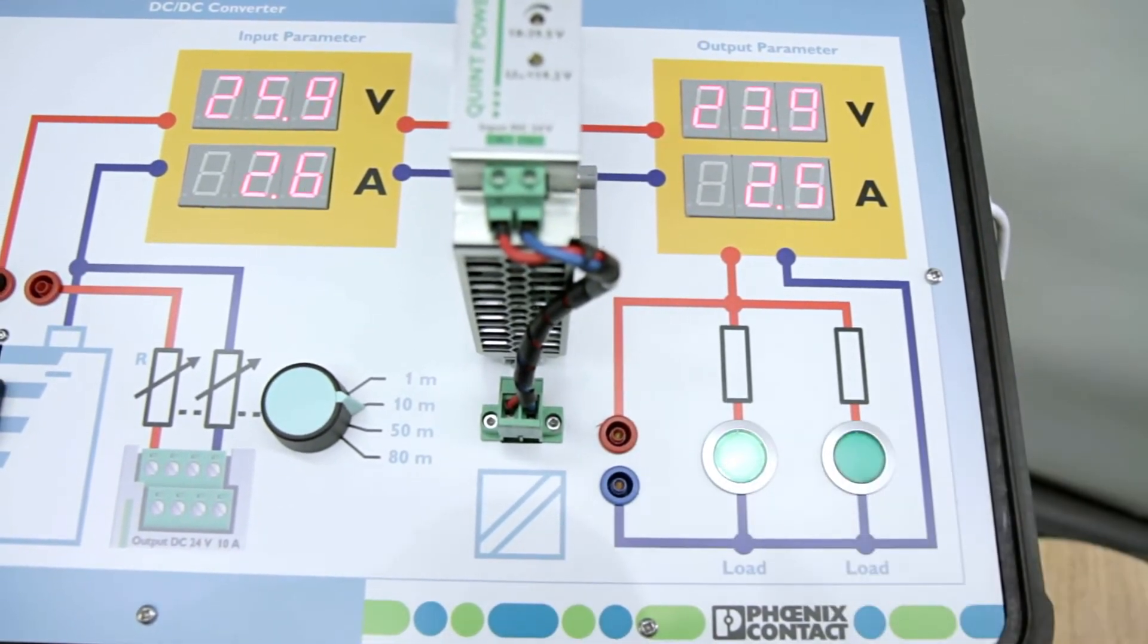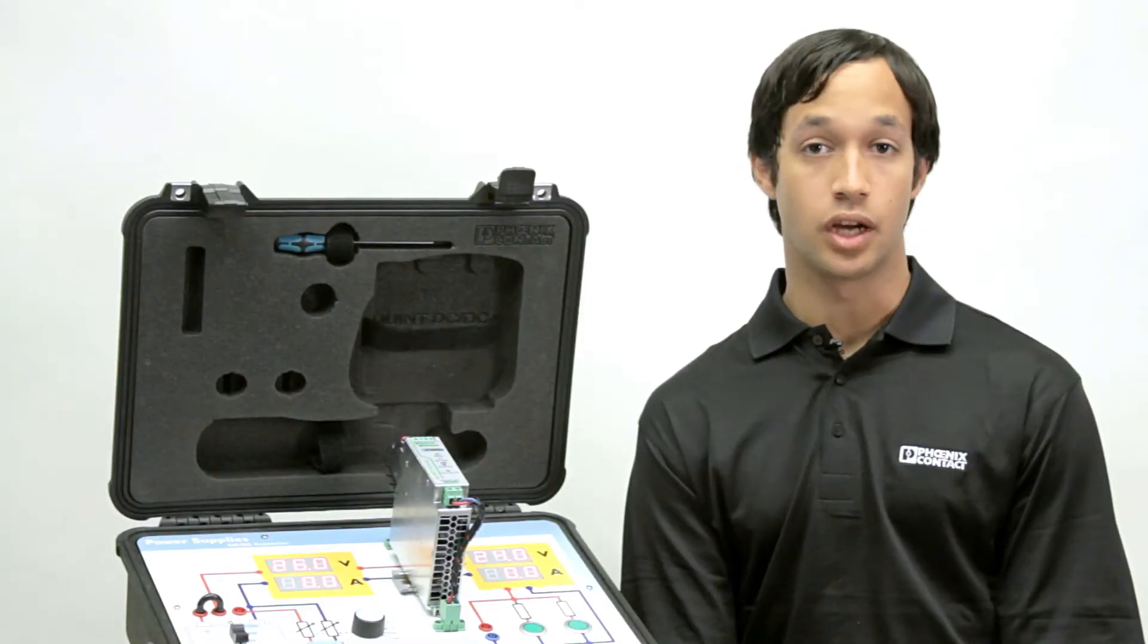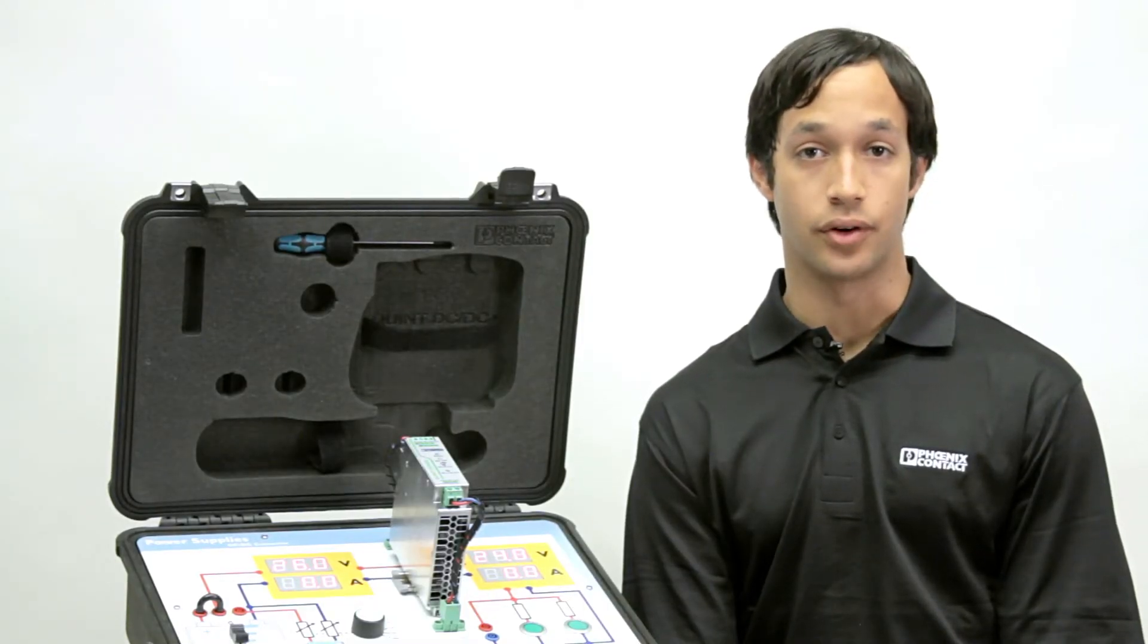We then turn on our system and add a load to simulate our PLC. Note the voltage is coming in through the DC to DC converter to our output.